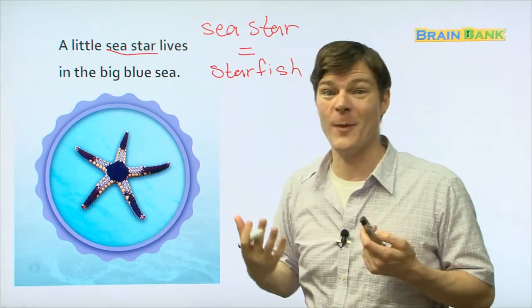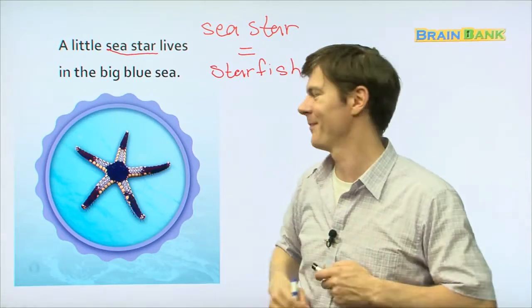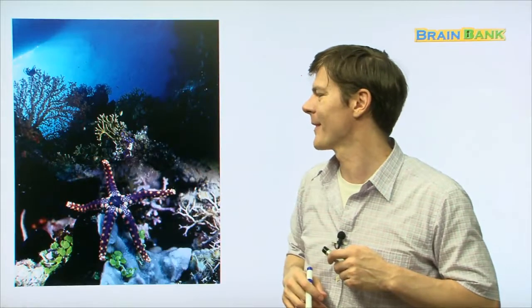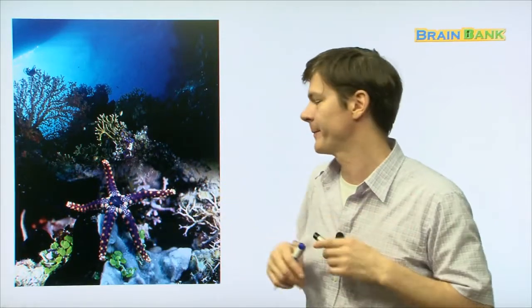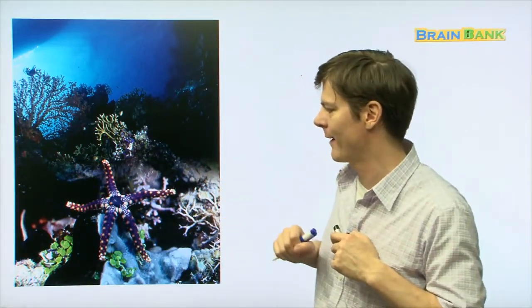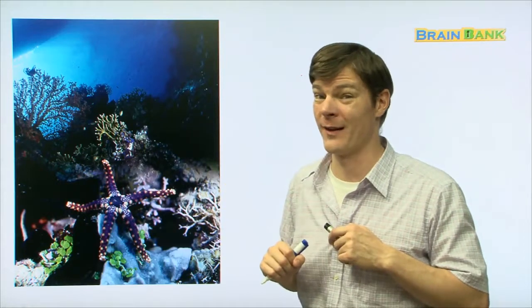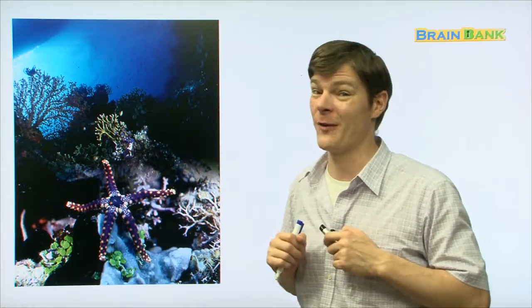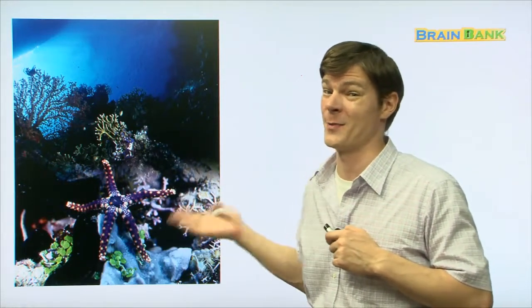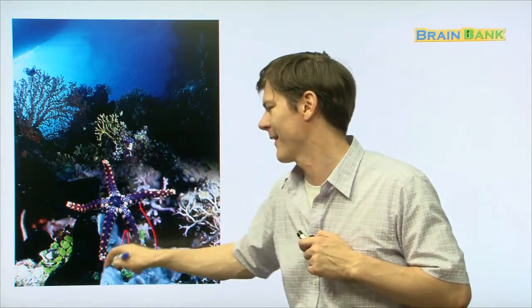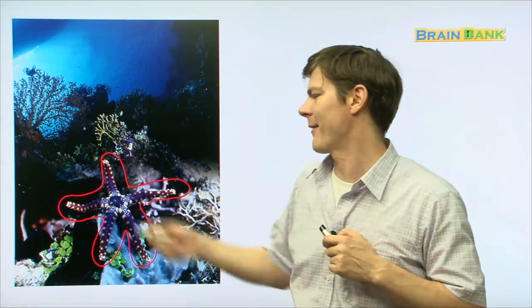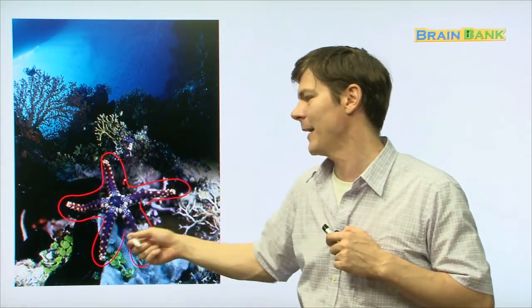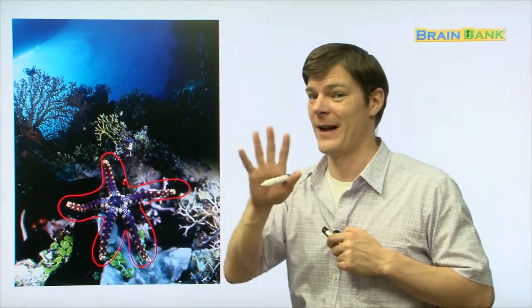So sea star is the same as starfish. It's just a different way to say the same word. And there he is on the bottom of the ocean floor, crawling around looking for food. We can see him right there. He's really pretty, right? He's very colorful. Most starfishes or sea stars are not this beautiful. But there he is, right there. How many legs does he have? One, two, three, four, five. Five legs.